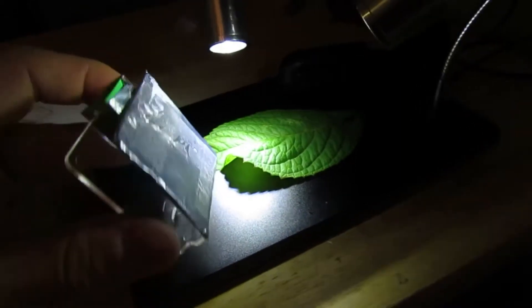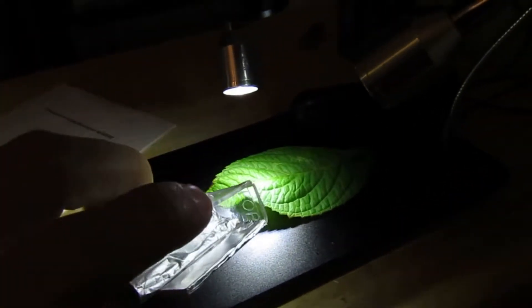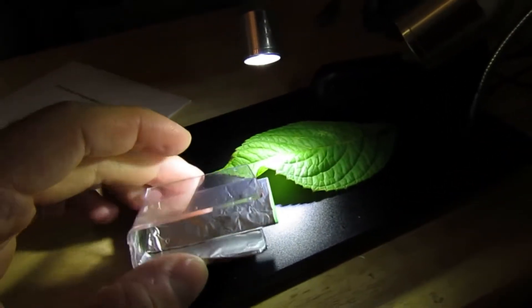So we just took a piece of plastic, used a heat gun to bend it into this shape, covered the bottom with aluminum foil.